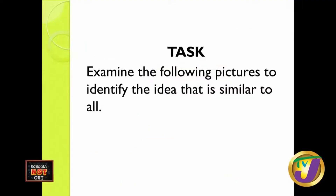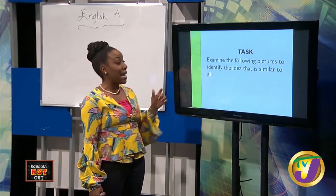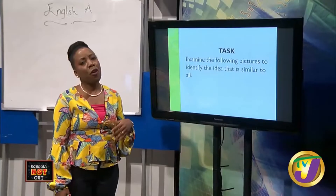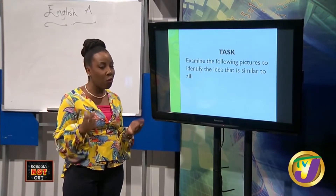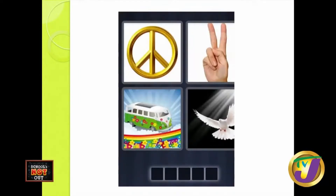To further prepare your brains for this lesson, we are going to do an introductory activity. Your task is to examine the following pictures to identify the idea that is similar to all of them — like the game called four pics one word. We have four pictures here. What is the idea common to all pictures? A clue: a five-letter word. Which picture does your eye look at first?